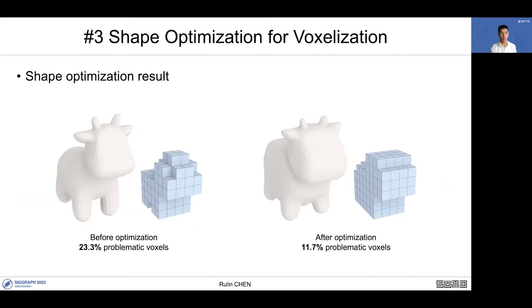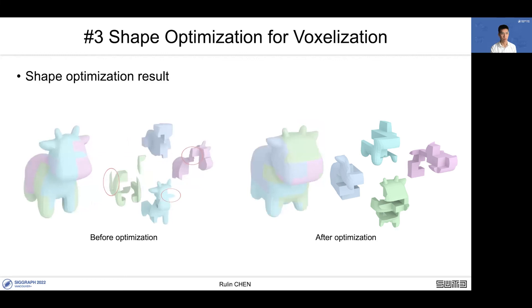Here are our optimization results. Before optimization, the curve has 23.3% problematic voxels; after optimization, it has only 11.7% problematic voxels. Before optimization, the curve puzzle has several structurally weak pieces; after optimization, all pieces are structurally sound.